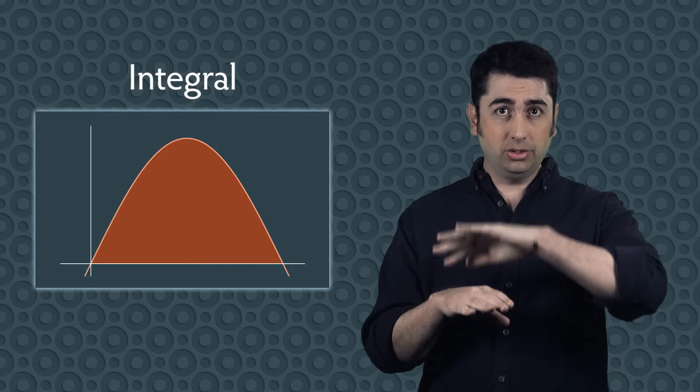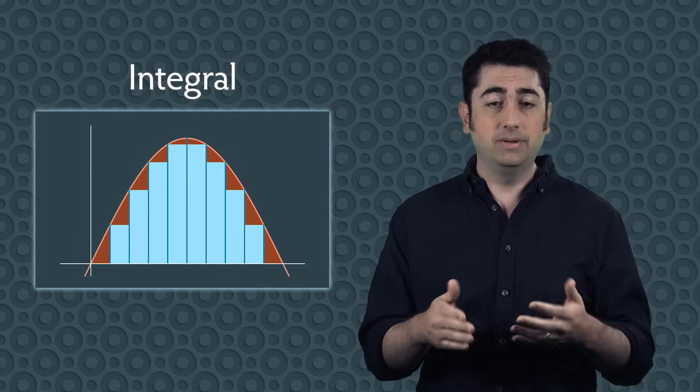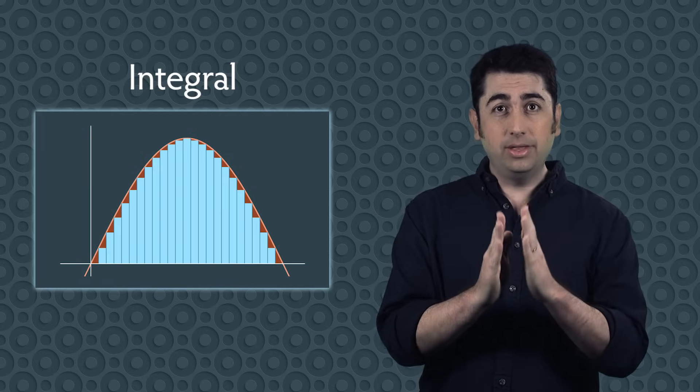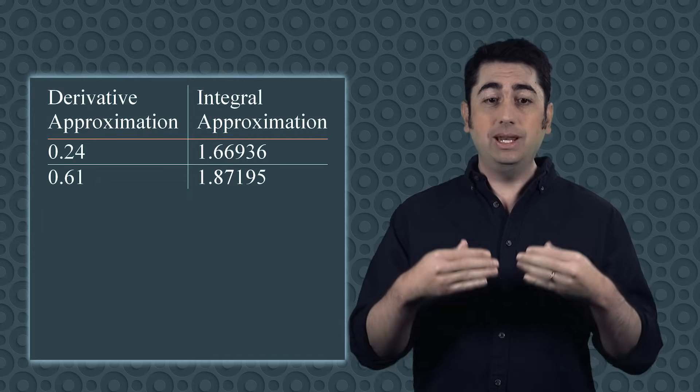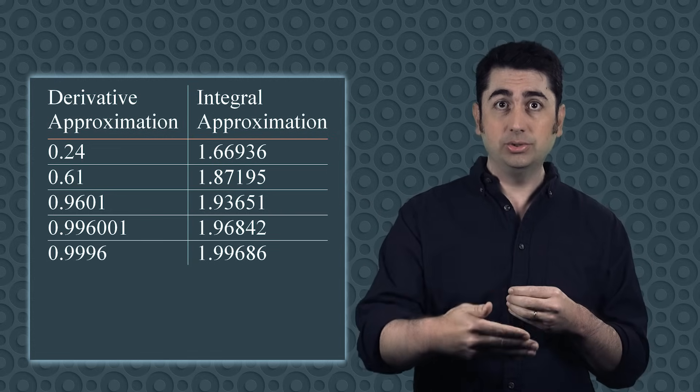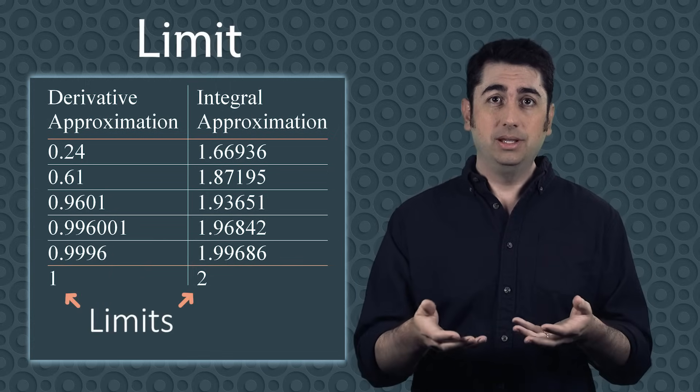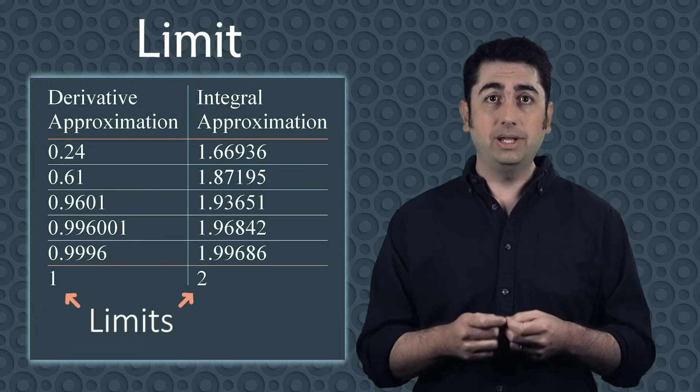In the case of the integral, we took the curve and we chopped it up into a bunch of rectangles to approximate the area under the curve. Then we took thinner and thinner rectangles to get better and better approximations. In both cases, we're using the same technique. In the case of the derivative, we're letting the points get closer to each other. In the case of the integral, we're letting the rectangles get thinner. In both instances, we're getting better and better approximations, and we're looking at what number these approximations are approaching. The number they're approaching is called the limit. And because the limits are key to computing both the derivative and the integral, when you learn calculus, you usually start by learning about limits.